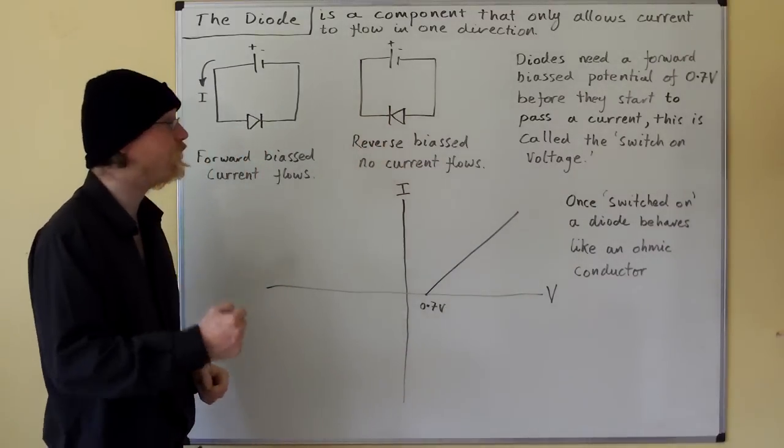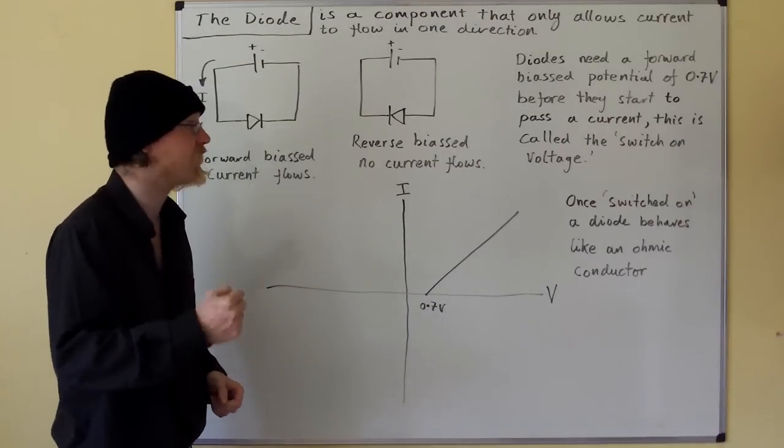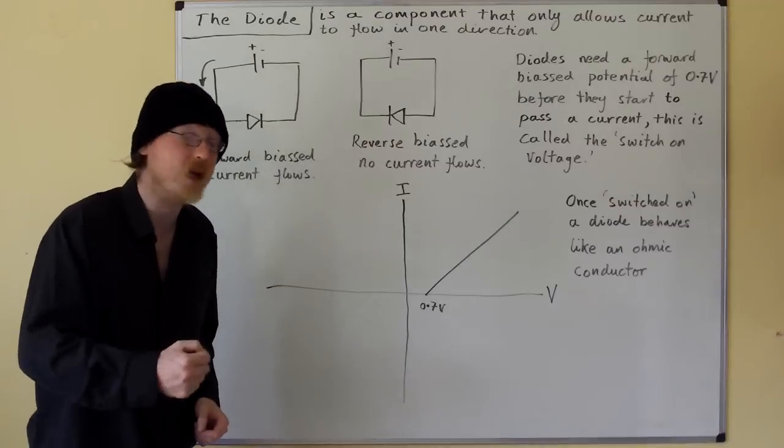Diodes need a forward biased potential of 0.7 volts before they start to pass a current. This is called the switch-on voltage.